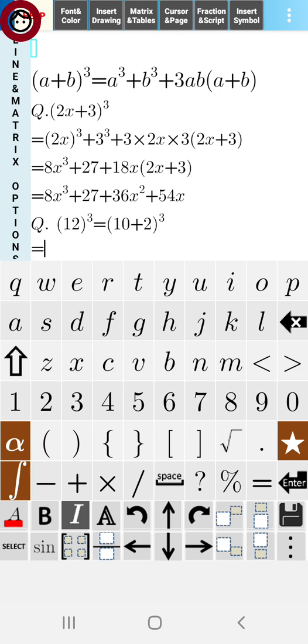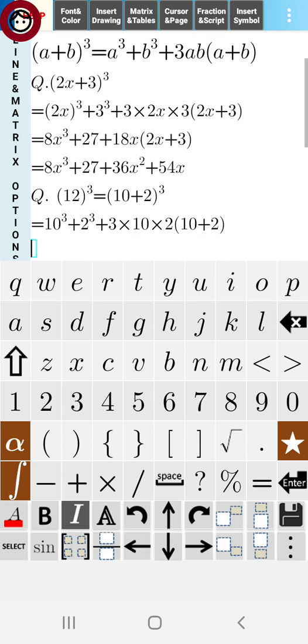In place of a we have 10 and in place of b we have 2. First of all we will write 10³ + 2³ + 3·10·2·(10+2).